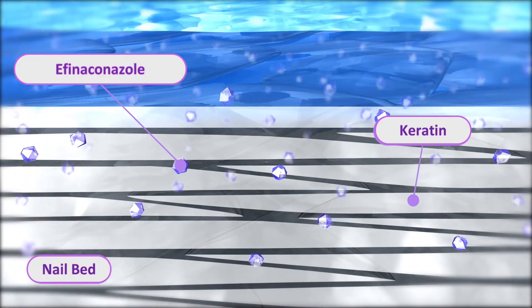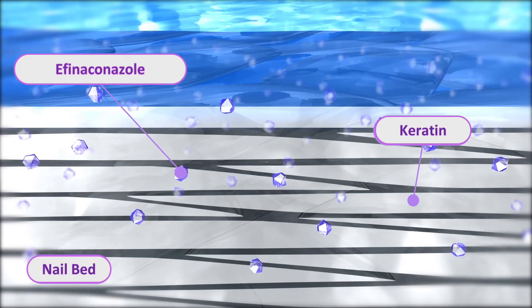The active ingredient, efinaconazole, passes through the keratin layers which form the nail and penetrates to the nail bed.